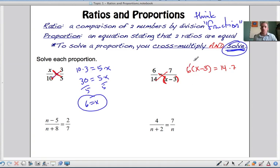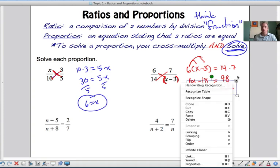So now we got to distribute and solve just like we did the last unit. 6x minus 18 equals 14 times 7 is 98. So now I'm just doing the steps we would do to solve an equation because we've got an equation set up.